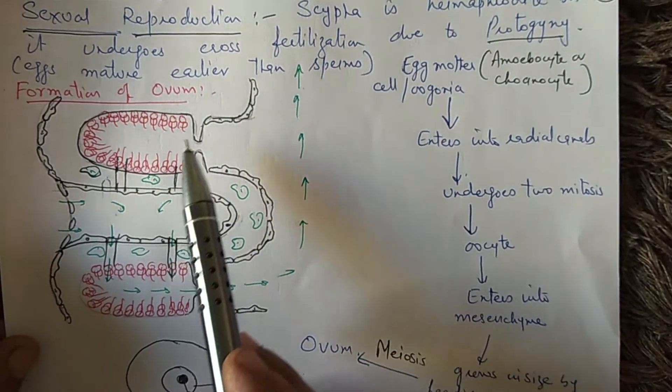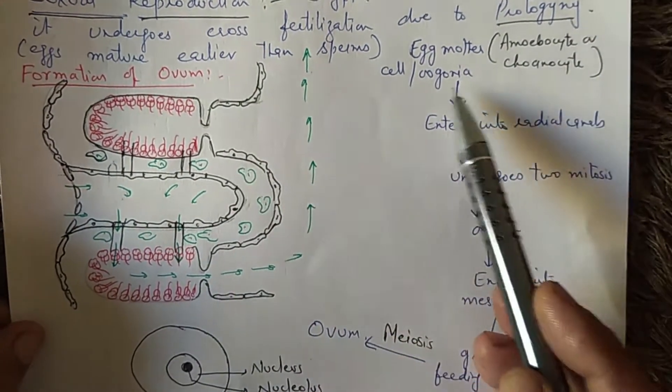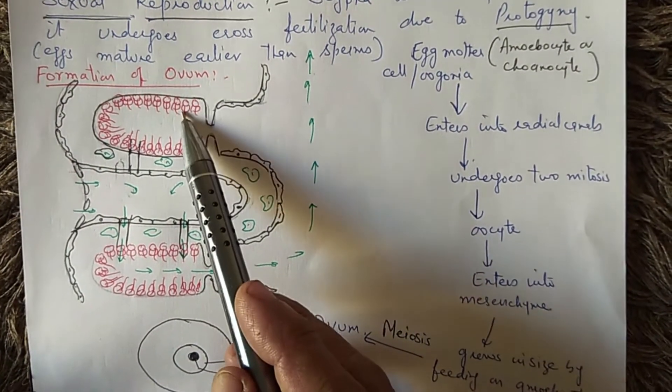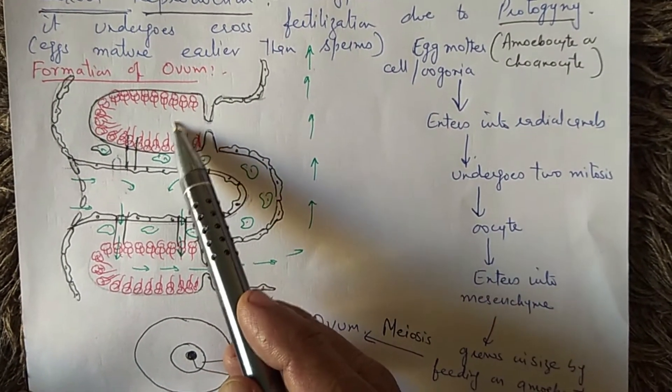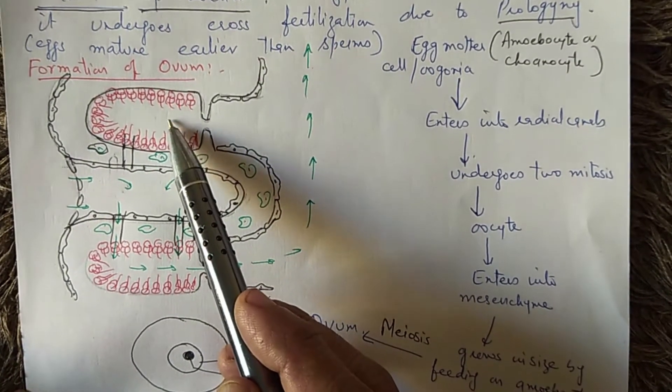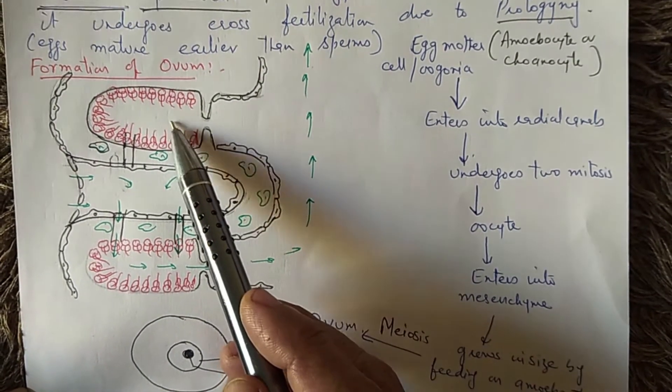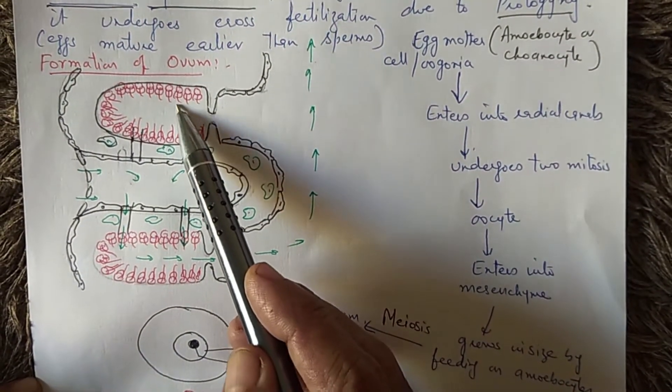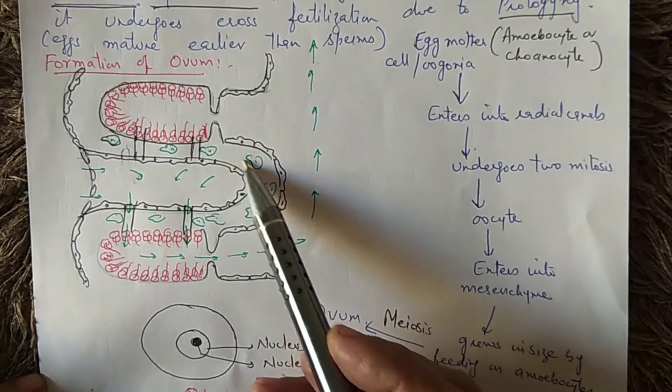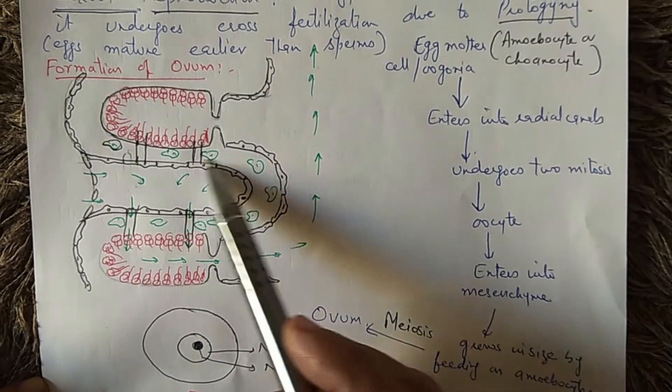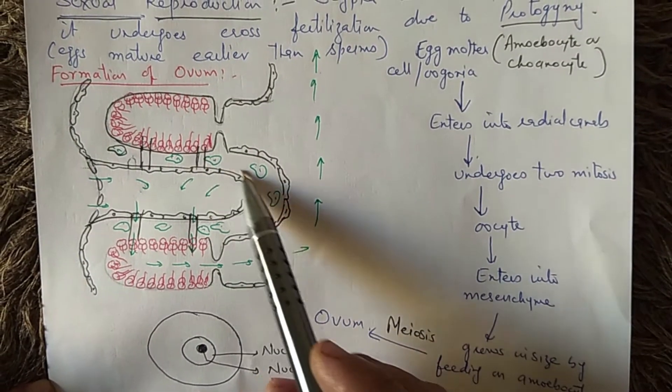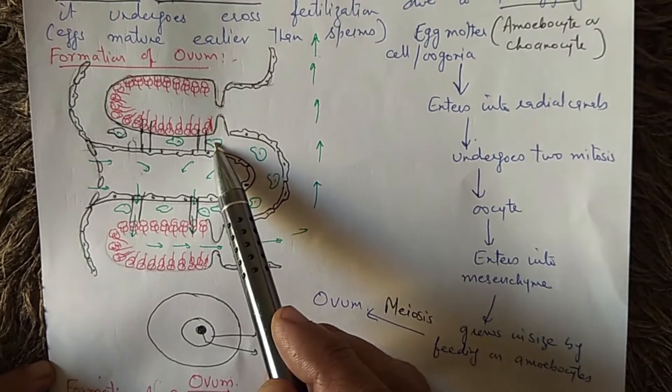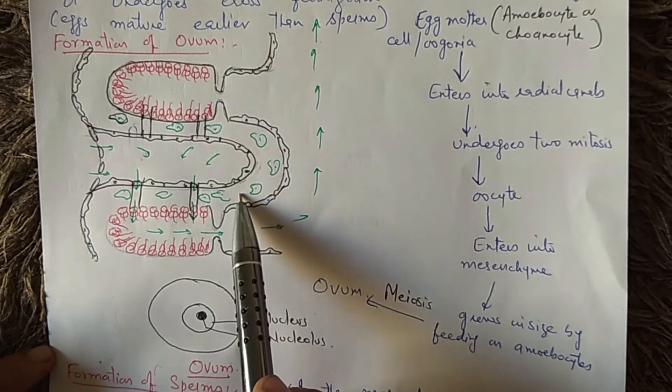First, we will study how ovum is formed. The egg mother cell may be a choanocyte or any amoebocyte. The egg mother cell enters the radial canals and undergoes two mitoses forming four oocytes. These oocytes enter into mesenchyme, that is, mesoglia. Here, the oocyte grows in size by feeding on other amoebocytes, and a fully grown oocyte undergoes meiosis and forms the ovum.